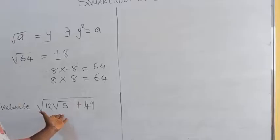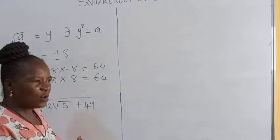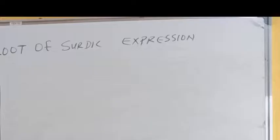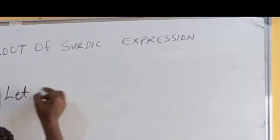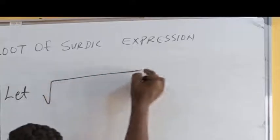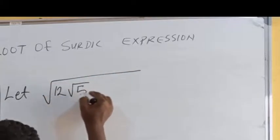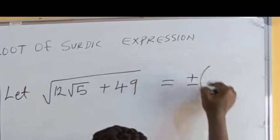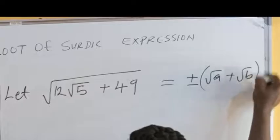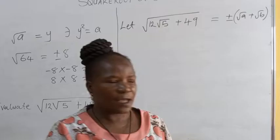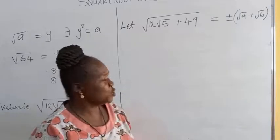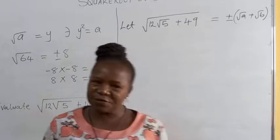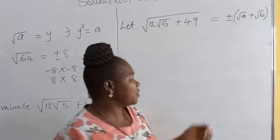So we expect a surd expression to be the square root, because we want to determine what is that surd expression such that when you multiply it by itself, it will give you the given one. Now let us assume that the square root of this expression is equal to ±(√a + √b). Having made this assumption, our job is to determine the value of a and b.